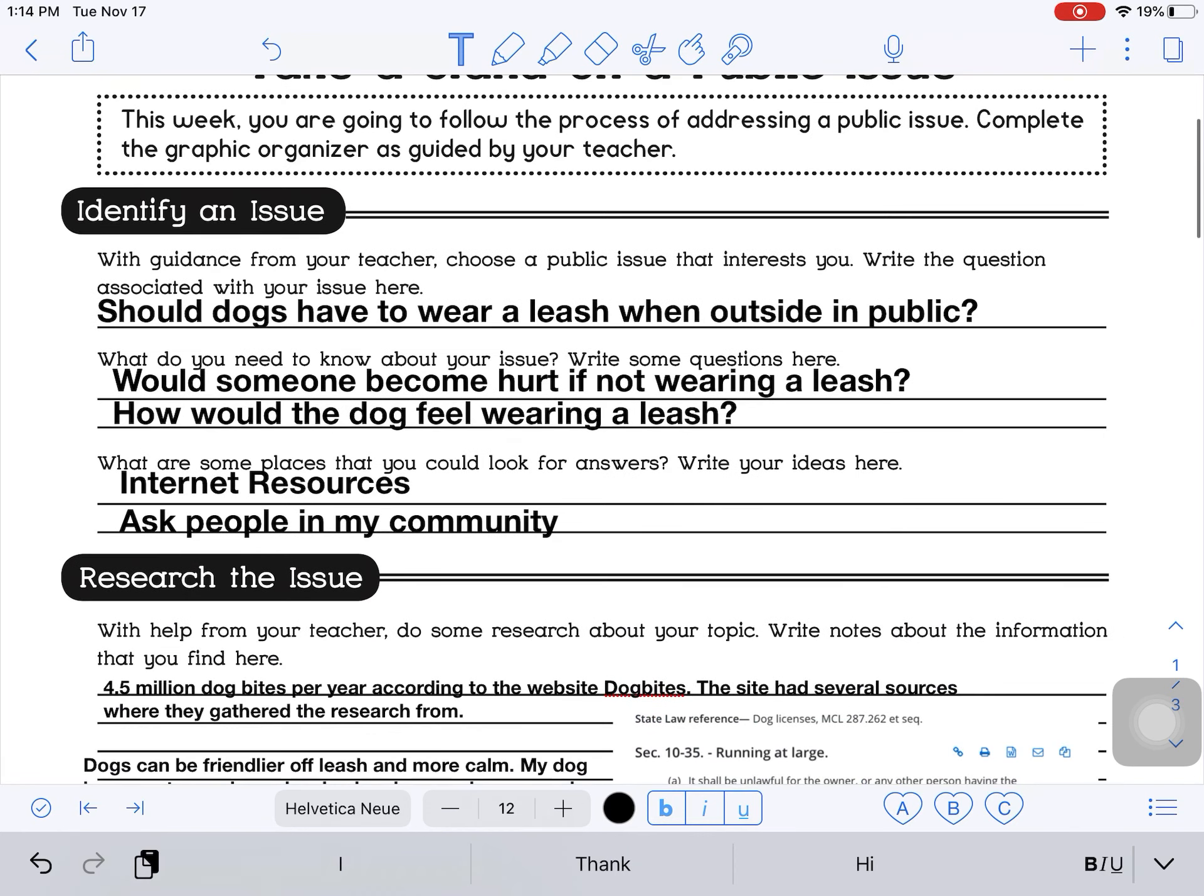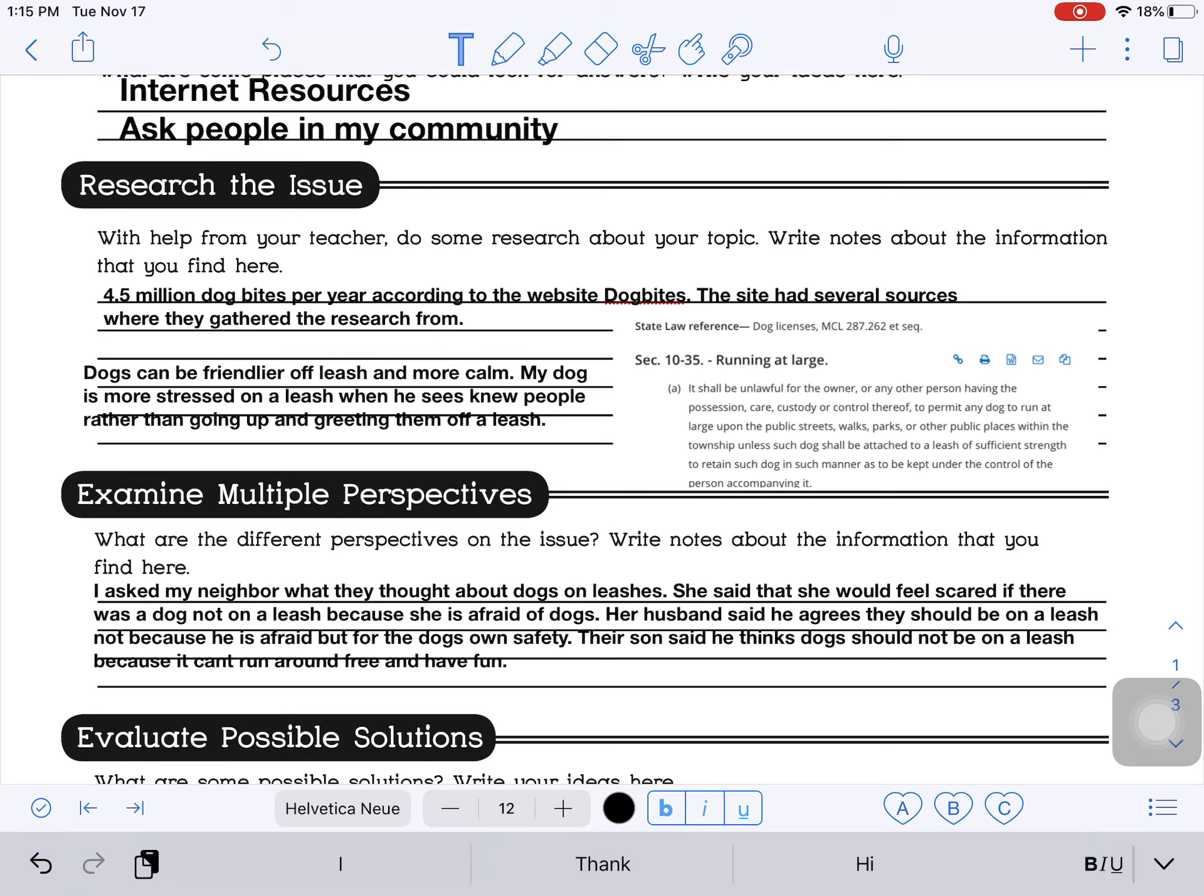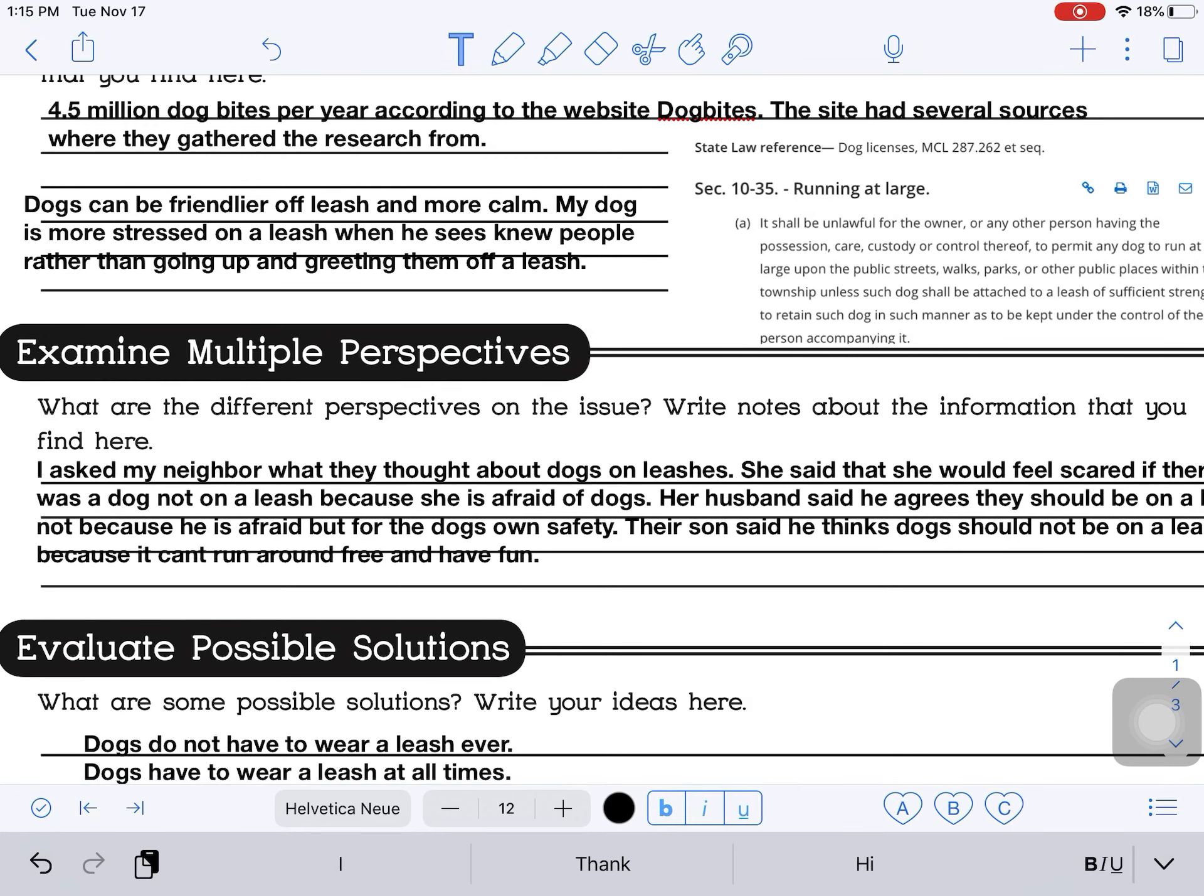So the last few days we talked about how to identify our issue. So our issue again is should dogs have to wear a leash when they are out in public. Should someone, and I would also write, what do you need to know about your issue? So would someone become hurt if they're not wearing a leash? How would a dog feel if they are on a leash? I said I was going to use my internet resources and ask people in my community. Yesterday we talked about how I researched the issue and how I found some reliable sources that I could add in about my research issue. And I even added a picture here about a law in Saginaw. And then yesterday we also talked about examining multiple perspectives. So I gave the example of my neighbors how one person says that they should be on a leash because she's afraid of dogs. The other one said that they should be on a leash because it's for the dog's safety. And the last person said that they don't think the dog should be on a leash because they should be able to run free and have fun.